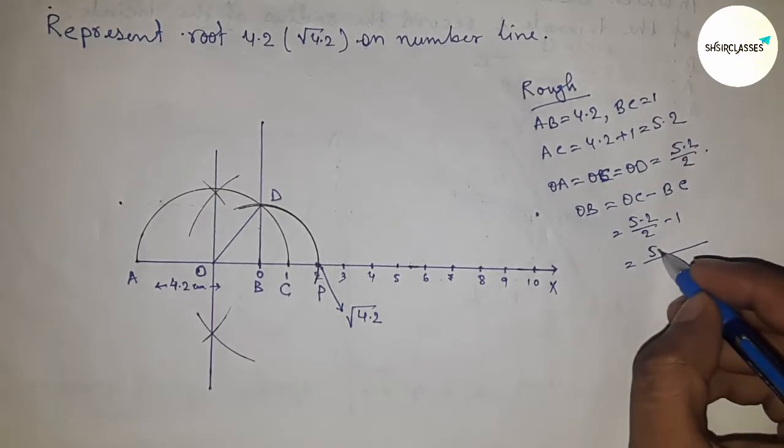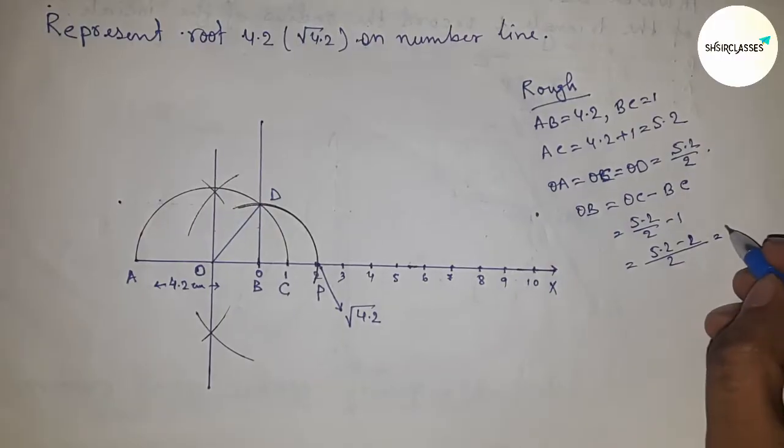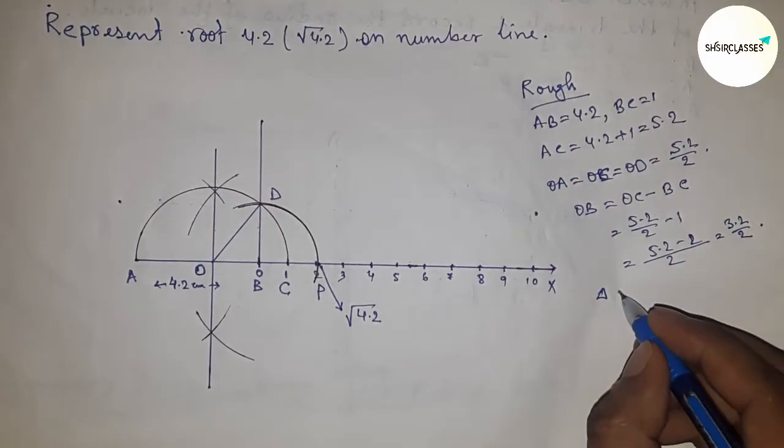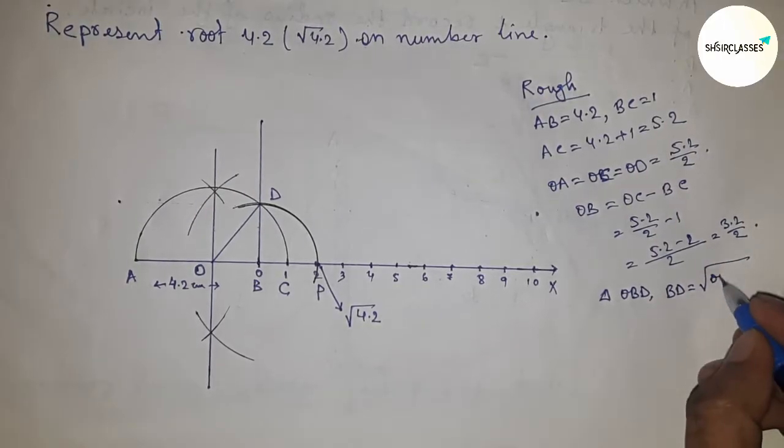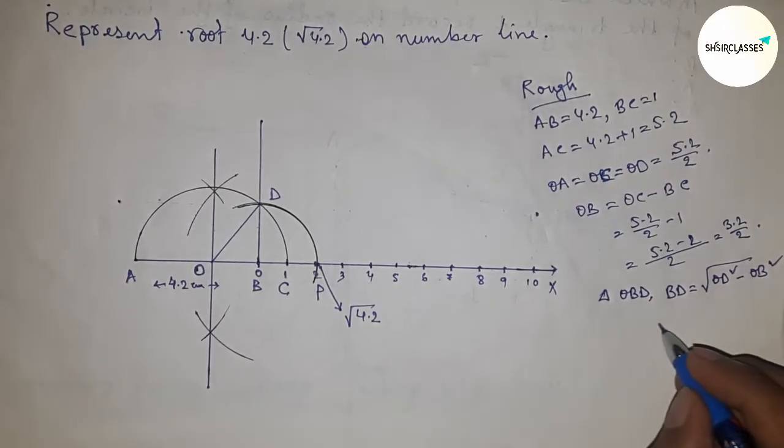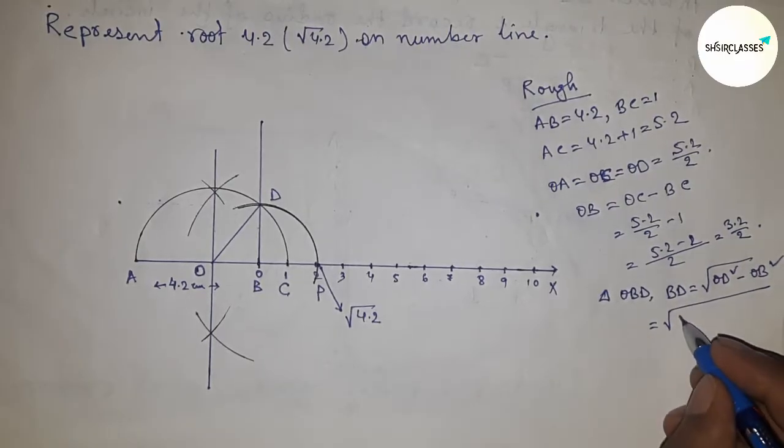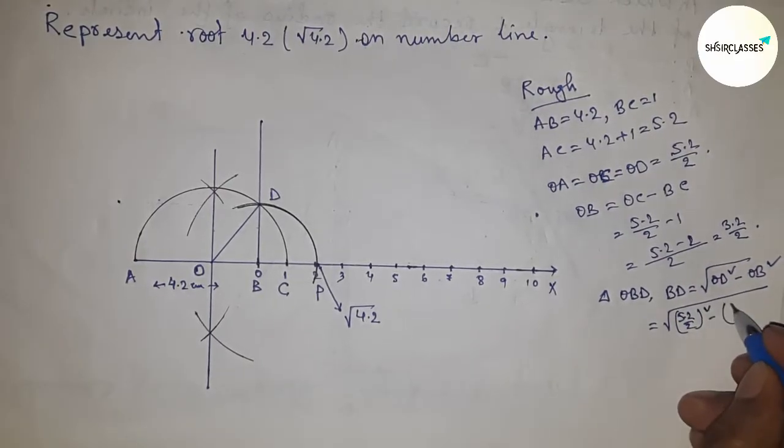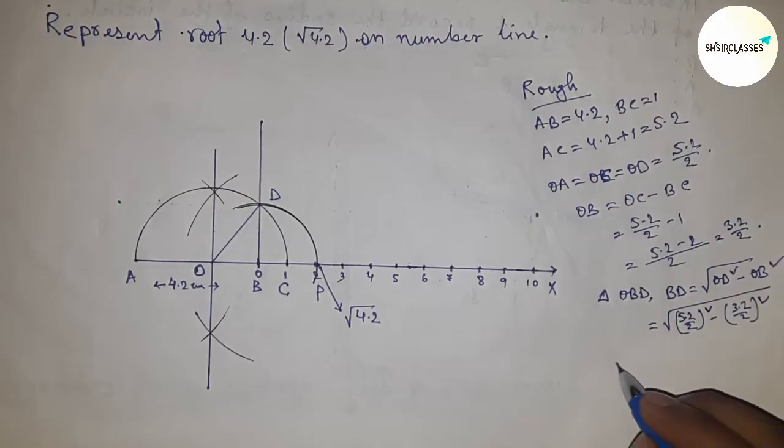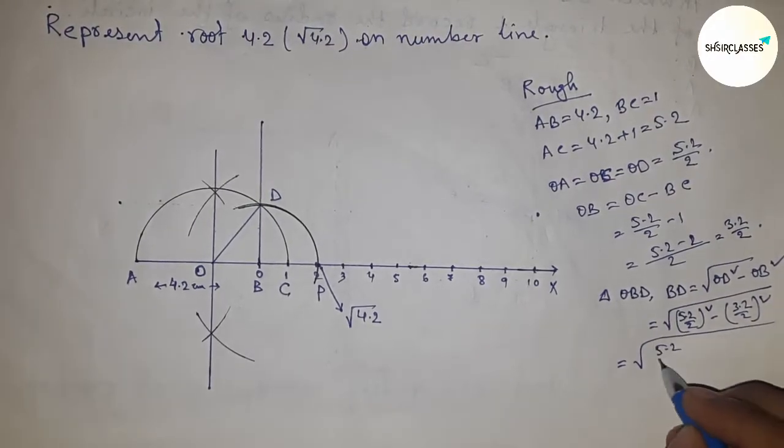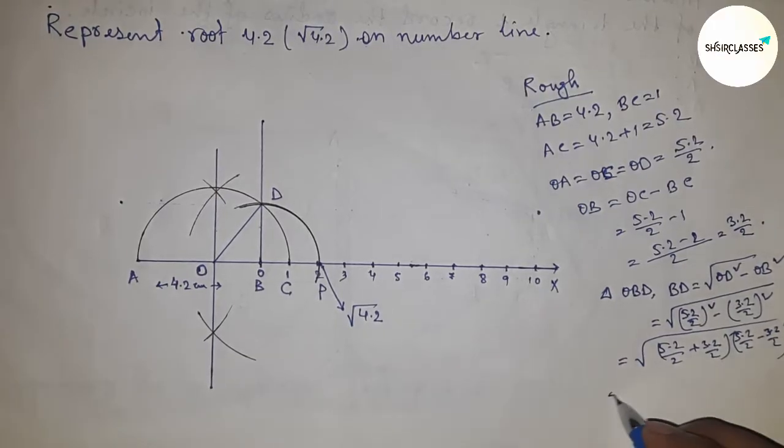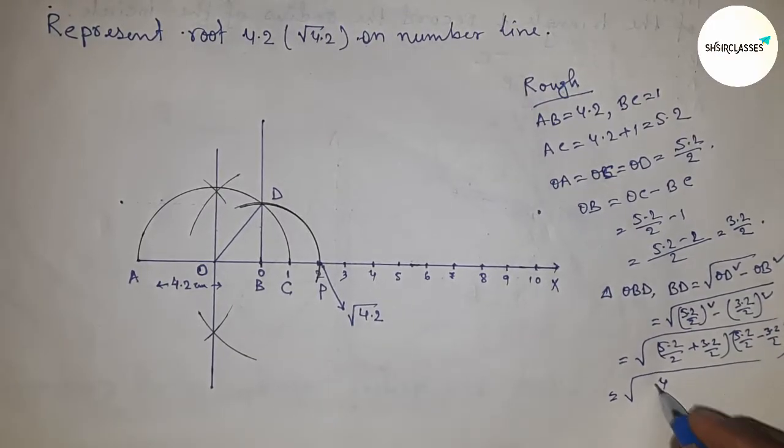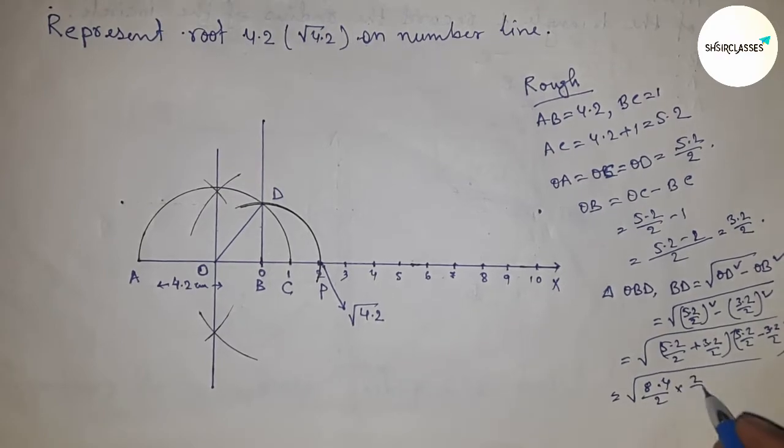In right angle triangle OBD, we can write BD equals square root of hypotenuse squared minus base squared. Putting the value of hypotenuse 5.2 by 2 whole squared, now applying the formula a squared minus b squared equals a plus b times a minus b. From this, we get 8.4 by 2 into 2, which equals 4.2.